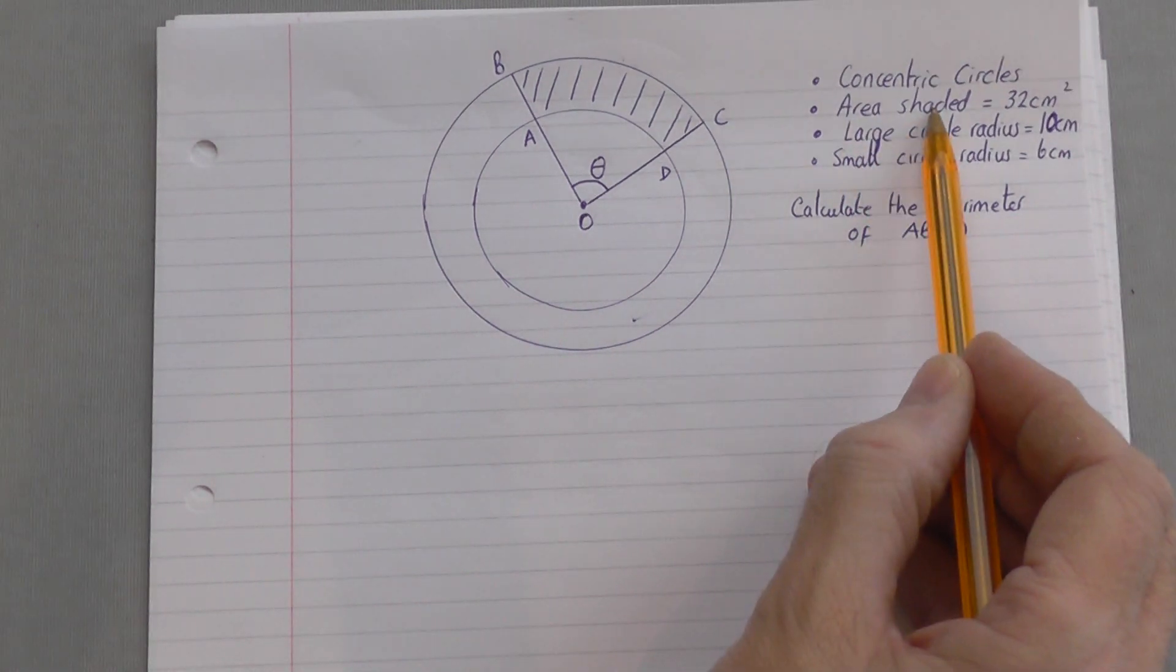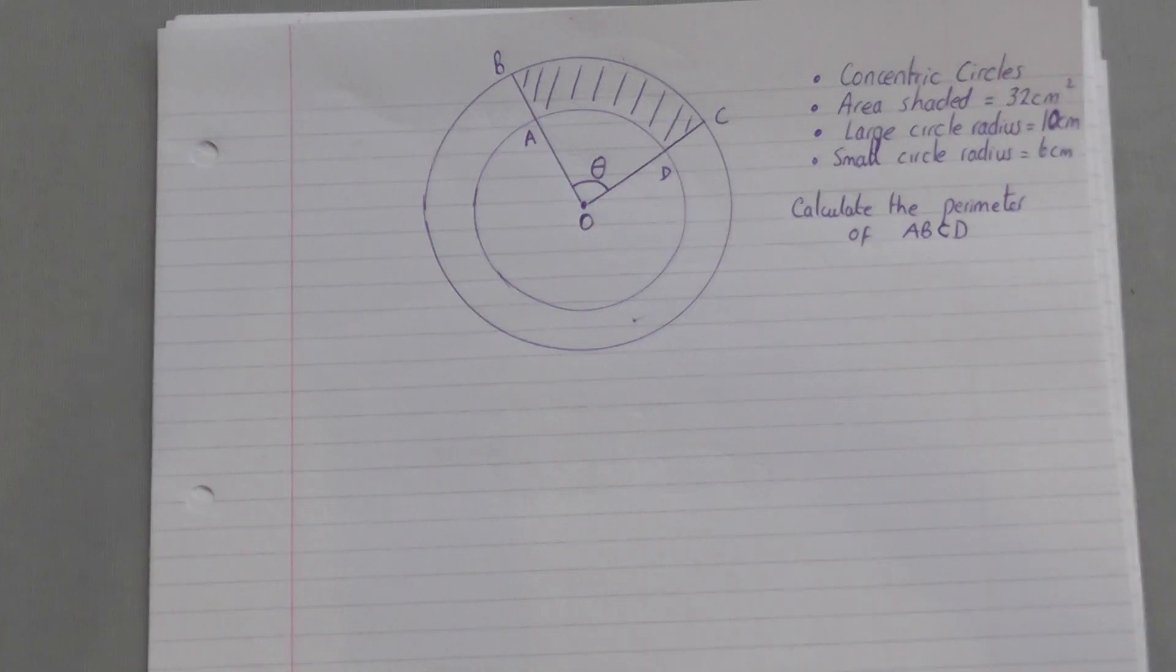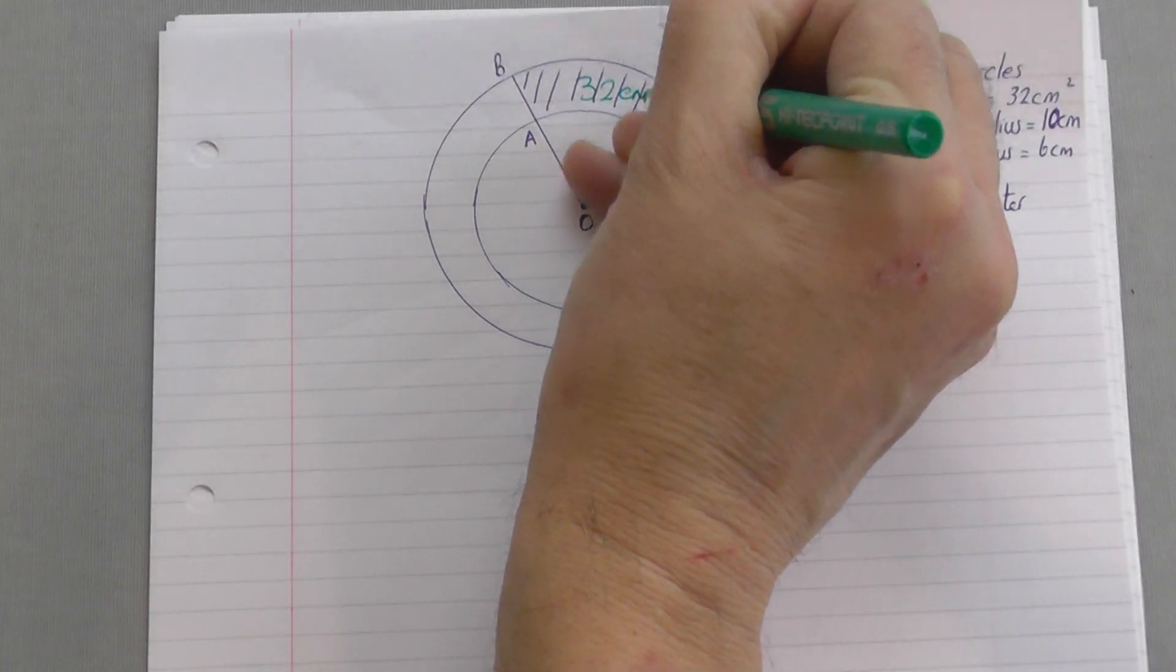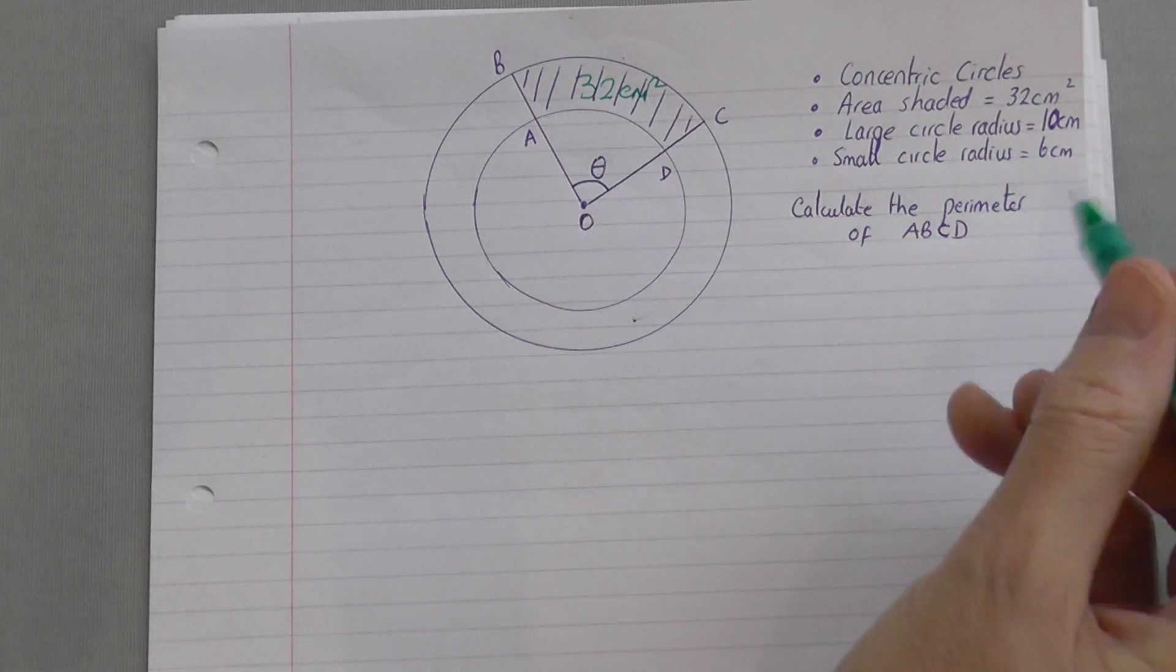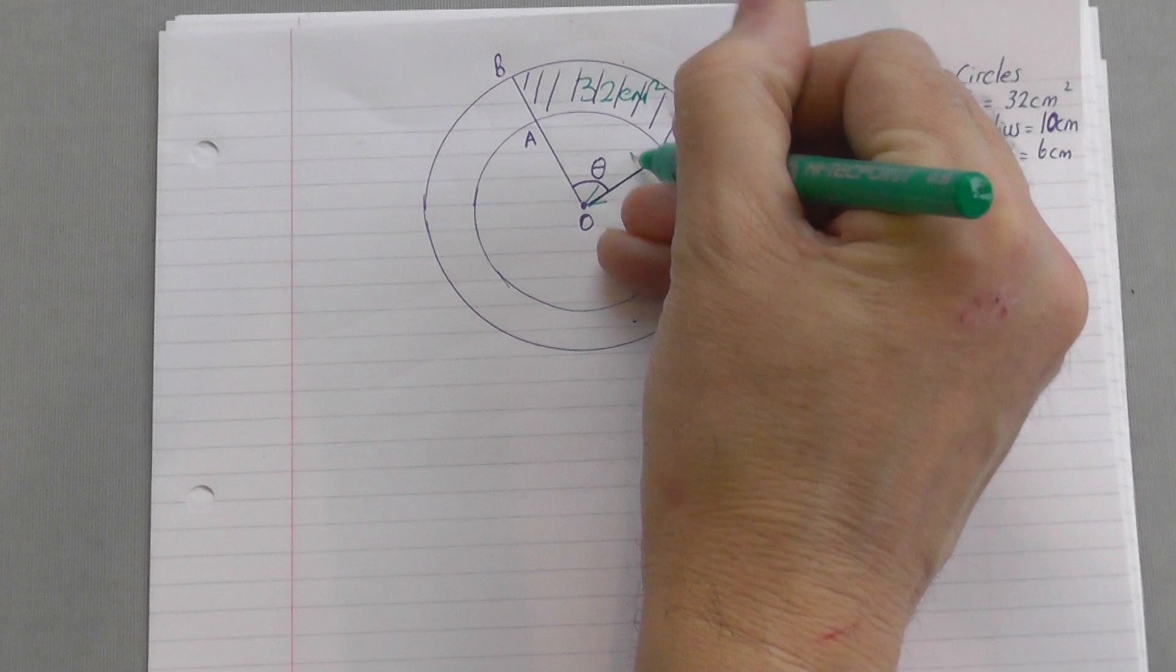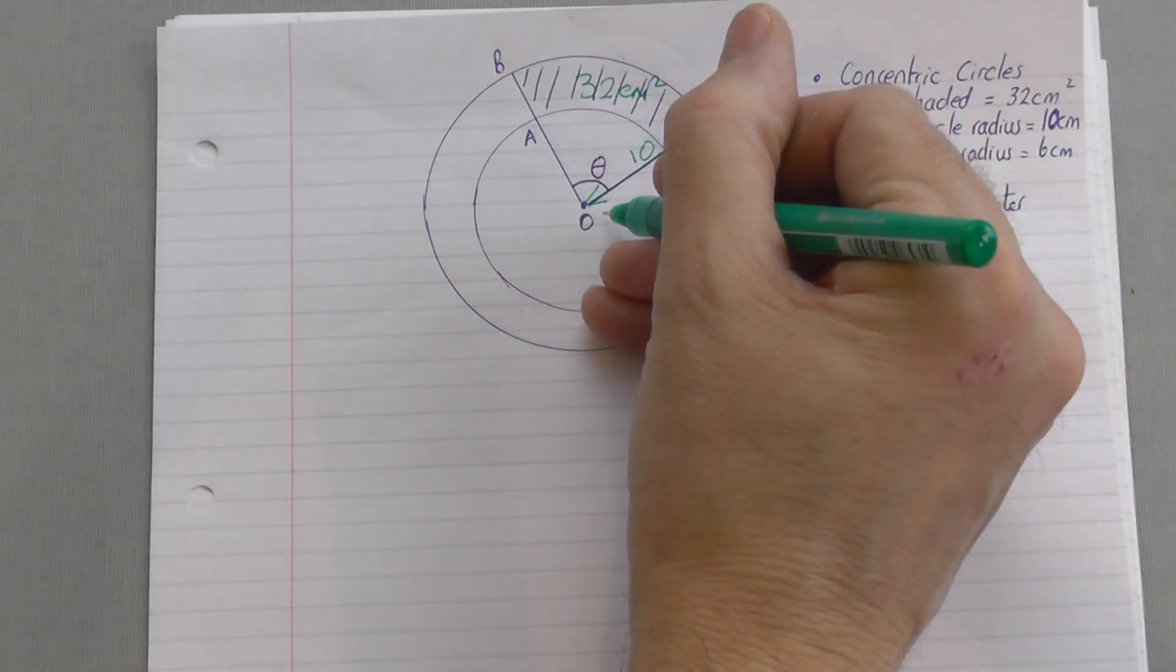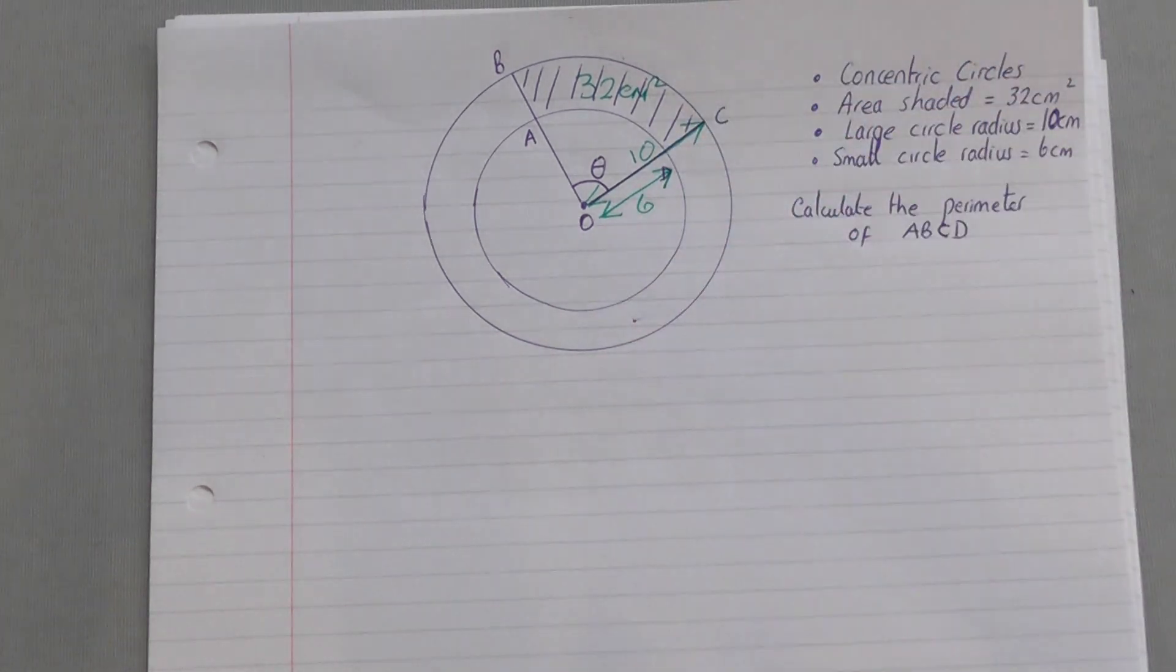You're also told that the area shaded in the picture, so this area shaded here, is 32 square centimeters. And you're told that the large circle radius is 10 centimeters, from there to there is 10. And you're also told the small circle radius is 6, so from there to there is 6. So that's the information you're told.